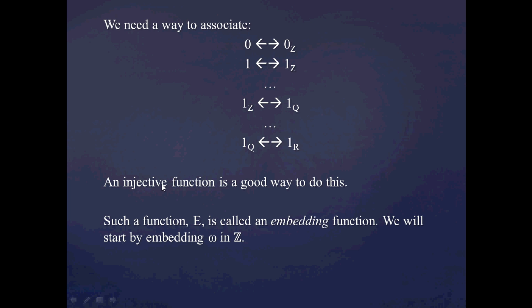In terms of the terminology, such a function — let's call it E — is called an embedding function. What we're going to do first is set up these associations between the set of natural numbers and the set of integers, that is, set up an embedding from omega to Z. What we want this embedding function E to do when it associates a natural number to an integer is preserve certain operations, such as addition, multiplication, and ordering. I'm going to lay out two processes that I claim we want to be equal to one another.